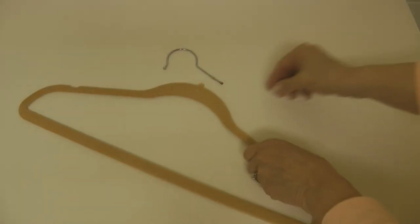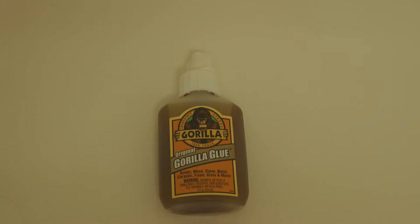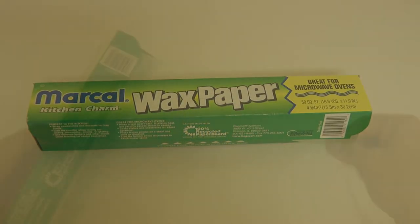If you use flocked or velvet-covered hangers and you've ever had one break, don't throw it away. Get out your Gorilla Glue and some wax paper. Lay the wax paper down on your surface so that your glue doesn't harm anything.